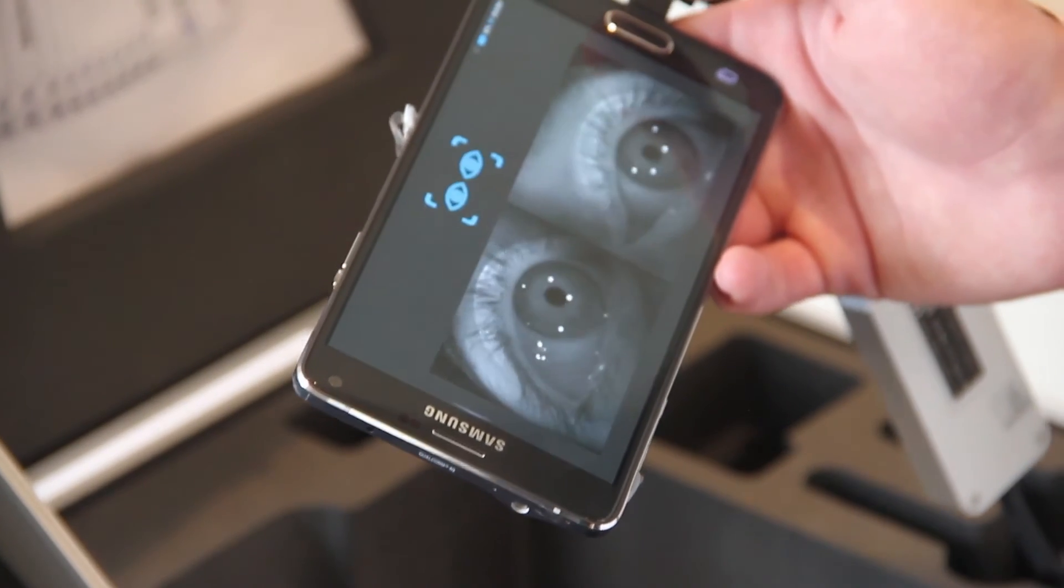Wherever you're fixating in real time, it's recording it. There's a green dot marking the exact areas where you're fixating, and it records all of it.